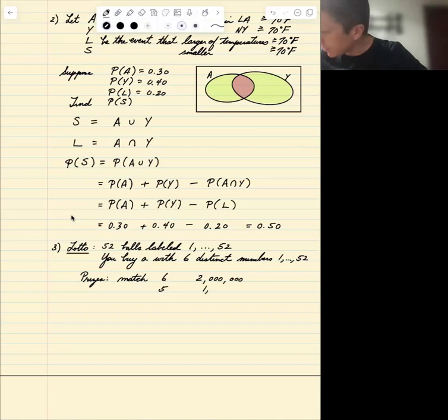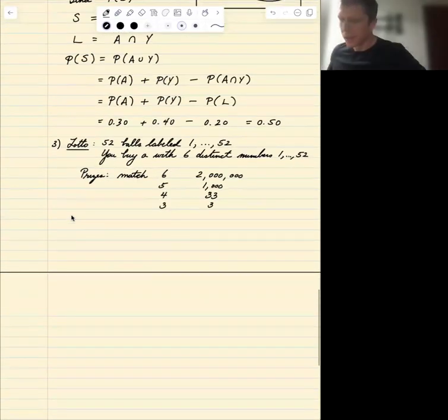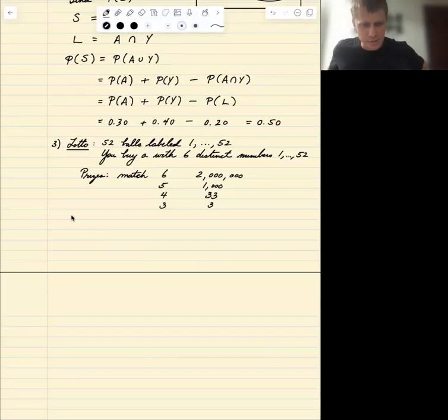Match five numbers you get a thousand dollars. Four numbers you get thirty three dollars. And three numbers you get three dollars. Pretty bad prizes but that's not really the point of the example right now, okay.